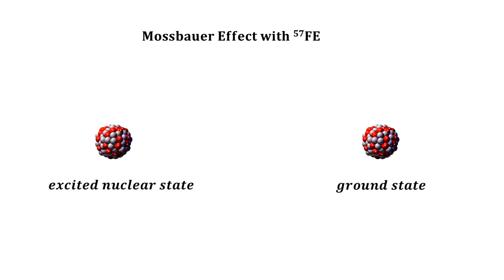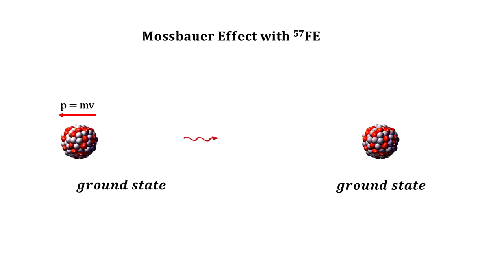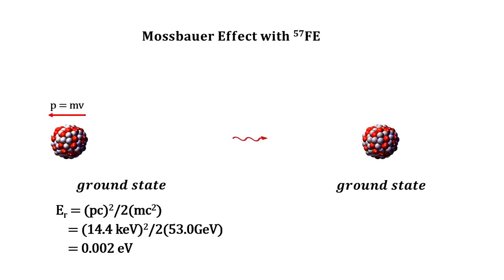The problem is that when the gamma ray is ejected, the nucleus recoils. Because of energy momentum conservation, the recoiling energy reduces the energy of the gamma ray. The gamma ray is no longer a match for the other nuclei, and it moves right through. There is no absorption.